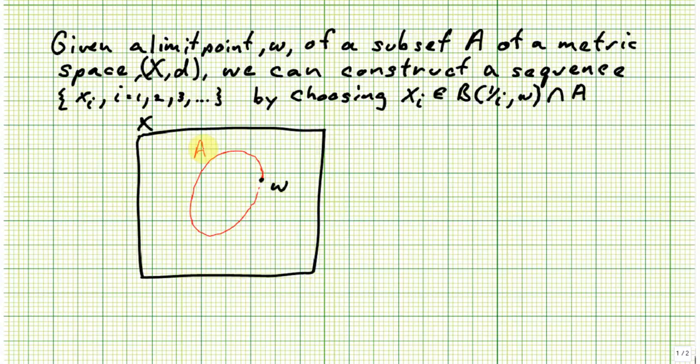And here's my set a. And we know w is already a limit point. So we should have a sequence in a that that converges to w. How can we find this sequence?